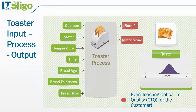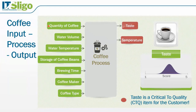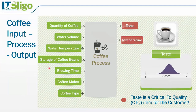Let's look at another example: the coffee input-process-output. We have the amount of coffee we put in, the amount of water, the temperature of the water, how we brew the coffee, how the material — the beans — were stored, the brewing time, the coffee maker machine, and the coffee type. All of these things have to be identified and controlled.